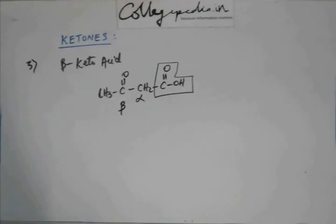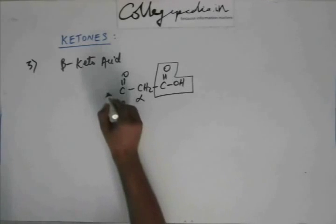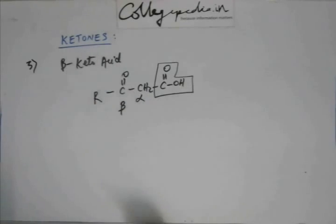This is how it looks. Now the remaining section instead of methyl there could be ethyl, propyl, butyl, whatever. So we can just write it as R. It could be hydrogen as well. So this is beta-keto-acid.